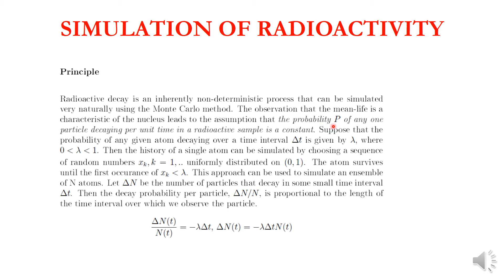To simulate this using random numbers, we assume there are initially N particles (capital N). For each particle, the probability of decaying per unit time in a radioactive sample is a constant — this is a physical fact. We assume this probability is lambda. The probability of any given atom decaying over a time interval delta t is assumed to be lambda, where lambda is between 0 and 1.